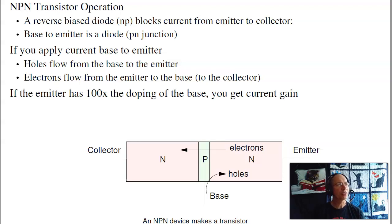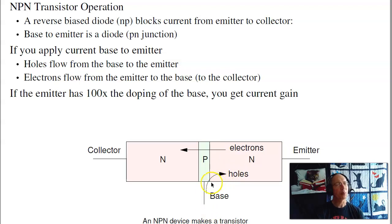For transistor operation, we'll just consider NPN devices. PNP are similar, but most of the devices we use in 320 are NPNs. Going from collector to emitter, somewhere in there is a reverse-biased diode. That N-P junction stops current flow, so normally there's no current flow collector to emitter. The base to emitter is a PN junction — that's a diode. If I apply current base to emitter, I'll have holes flowing with the P-type material to the N-type material. For every hole, there's an electron that flows N to P. For a transistor, the base is really, really thin, so the electrons going into the base shoot right through and wind up at the collector. The electrons on the collector side are majority carriers and they flow freely.